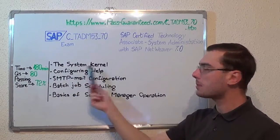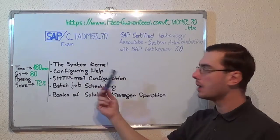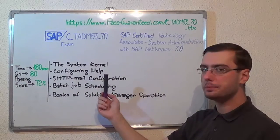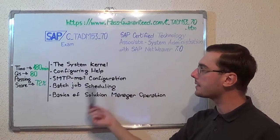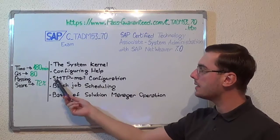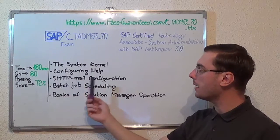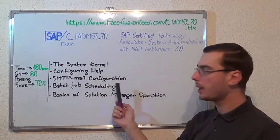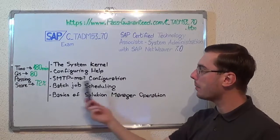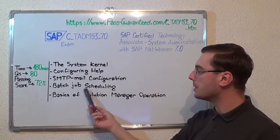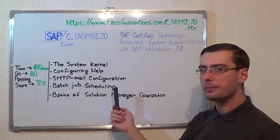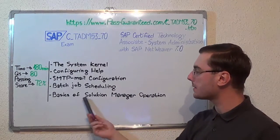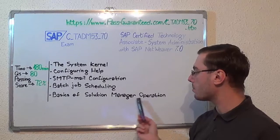The first one, the system kernel. Second, configuring help. Next, SMTP manual configuration. Then batch job scheduling. And the last one, basics of solution manager operation.